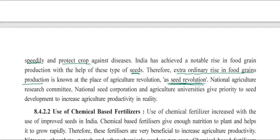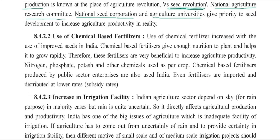There is a National Agriculture Research Committee and National Seed Corporation, along with agricultural universities, that are developing improved seeds. Similarly, the use of chemical fertilizers has been added. Along with improved seeds, we are also using chemical fertilizers. These chemical fertilizers provide nutrition to plants, giving us healthier plants that grow quickly. These fertilizers are beneficial for building productivity, mainly nitrogen, phosphate, potash, and other chemicals used in crops.